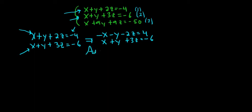Now we can add. x plus negative x is zero. Negative y plus y is zero. And then negative 2z plus 3z is just z. 4 plus negative 6 is negative 2. So z is equal to negative 2.